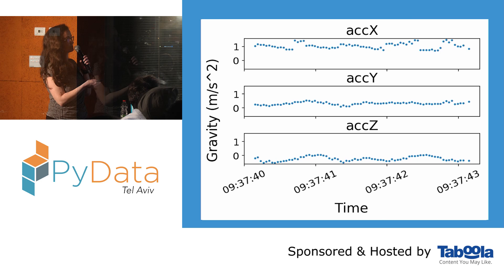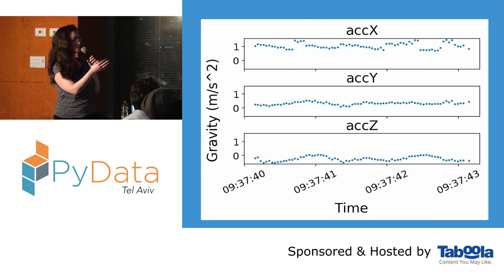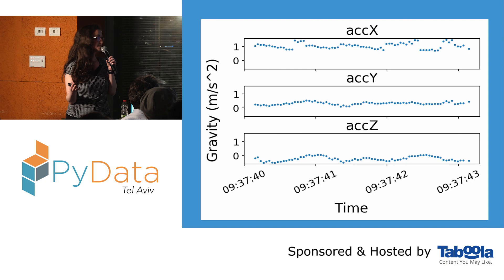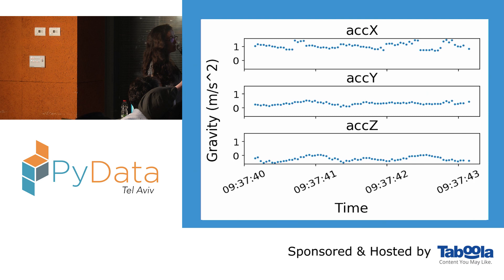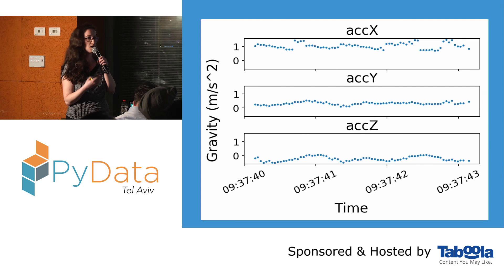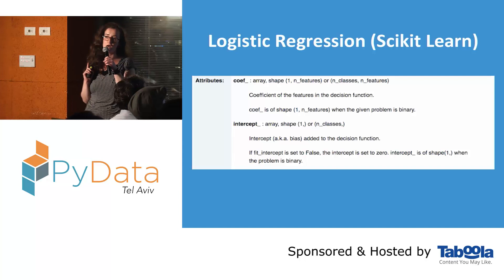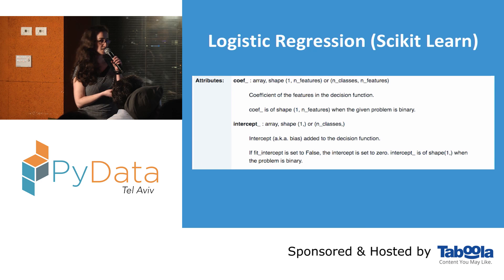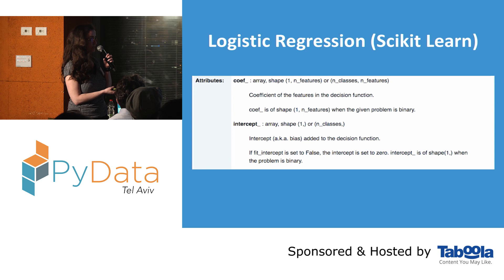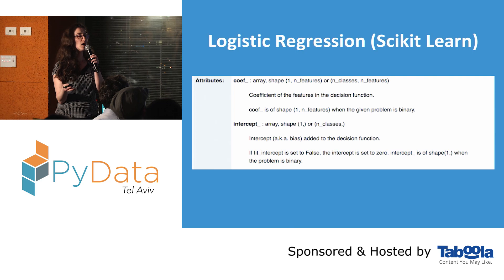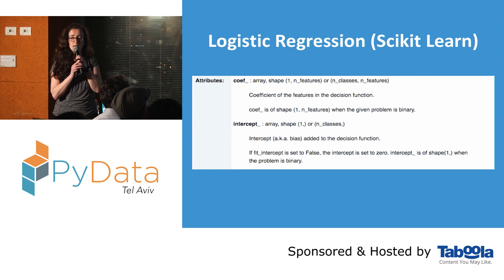What I did was take all the signals, concatenate them into one vector, and try different window sizes — different frames of the data. What you see here is about three seconds, but I tried all kinds of window sizes in my algorithm. The algorithm I first chose was logistic regression. The reasons were that it's a really simple model that you can easily implement as a mathematical equation. Since I didn't know where the algorithm would eventually be implemented, this was a nice solution because a mathematical equation can be implemented on the phone, on the watch, or on the server.